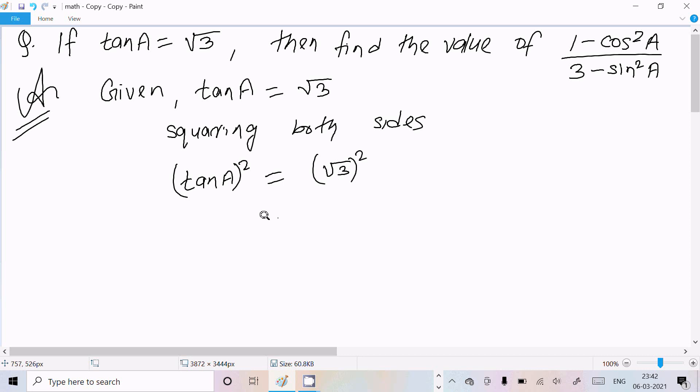On the right, √3 squared becomes 3. So tan²A = 3. Now on the right side we need to find the value, and it's all in the form of cos and sin, so I am going to convert this into the sin and cos form.